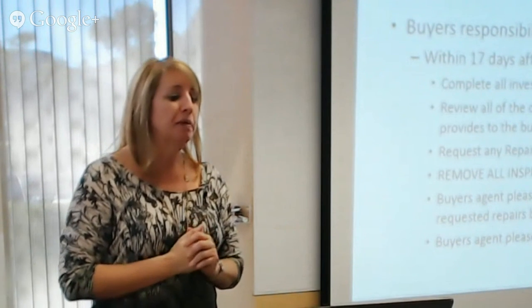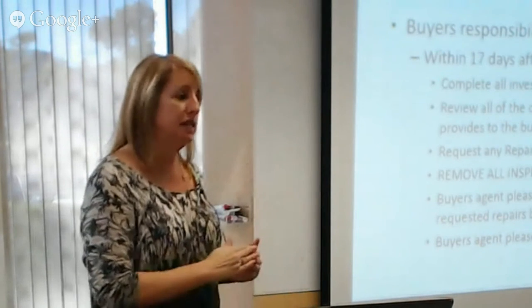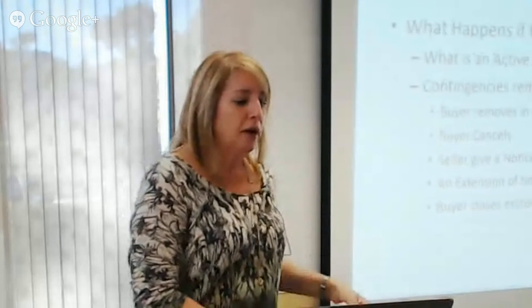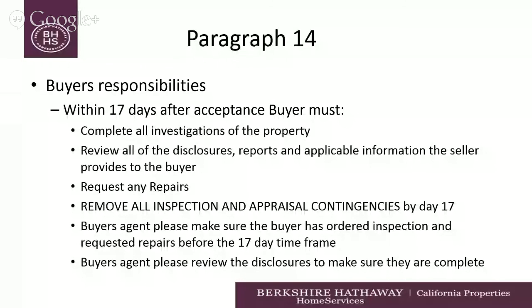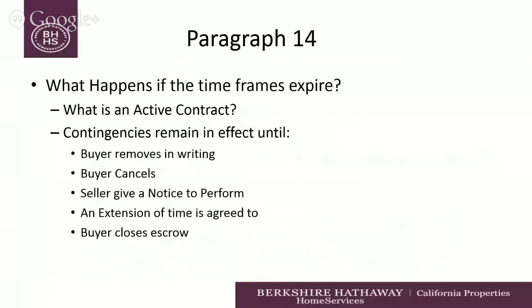Make sure those repairs are negotiated prior to the 17 days. Now let's talk about what happens if the timeframe expires. In our contract, paragraph 14, we have what's called an active contract. An active contract means contingencies must be removed in writing. The last item in your packet is your contingency removal — this is how you remove contingencies in writing.